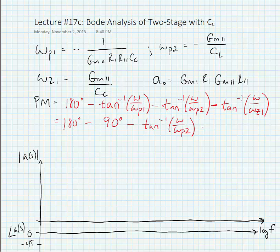So the gm of the second stage is going to be, or the arc tangent of that is going to be a very small number so we're going to approximate it as zero.